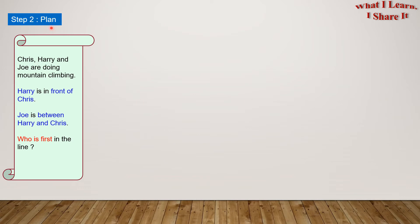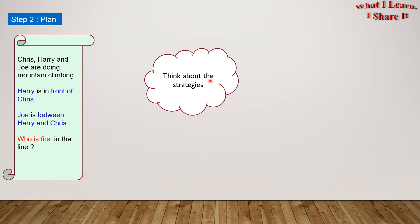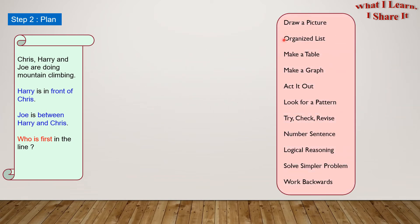Step 2: Plan. Let's think about the strategies. Here are the strategies that we can use: draw a picture, organize a list, make a table, make a graph, act it out, look for a pattern, try check revise, number sentence, logical reasoning, solve a simpler problem, and work backwards. I have chosen to draw a picture and logical reasoning.